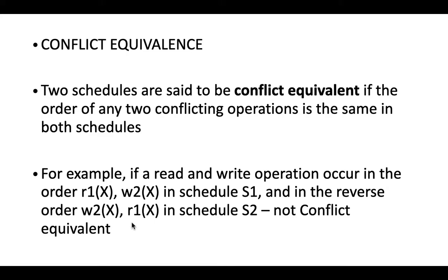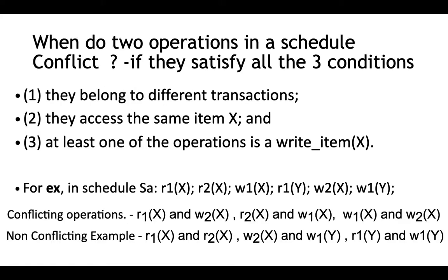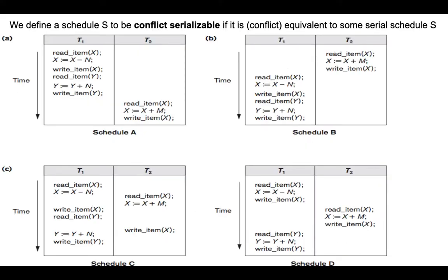Coming back to the example: we had schedules A, B as serial schedules, and schedules C and D as non-serial schedules. Schedule C was not serializable because it doesn't produce the same result as any serial schedule. Schedule D was serializable because it gave the same result as schedule A and schedule B.